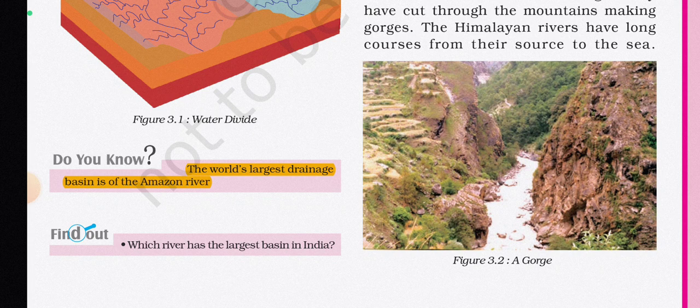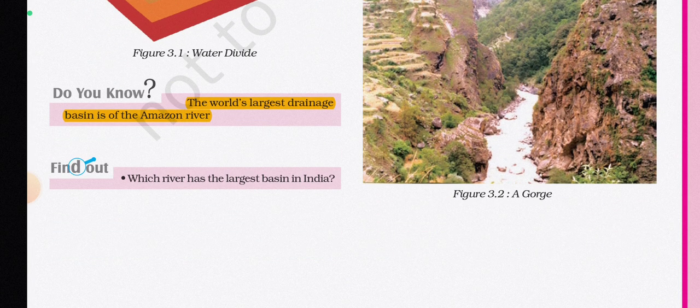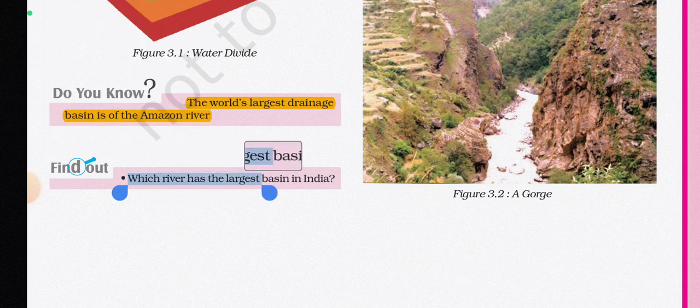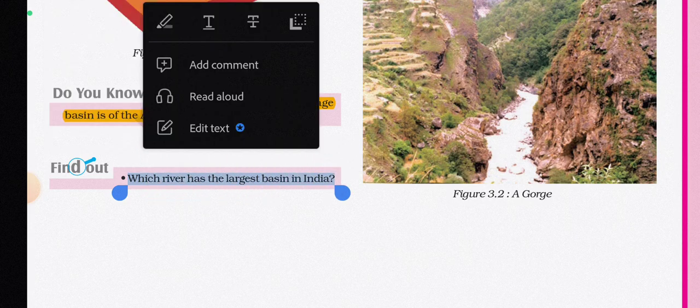Any elevated area such as a mountain or upland separates two drainage basins — such an upland is known as a water divide. The world's largest drainage basin is that of the Amazon River. Now, which river has the largest basin in India?